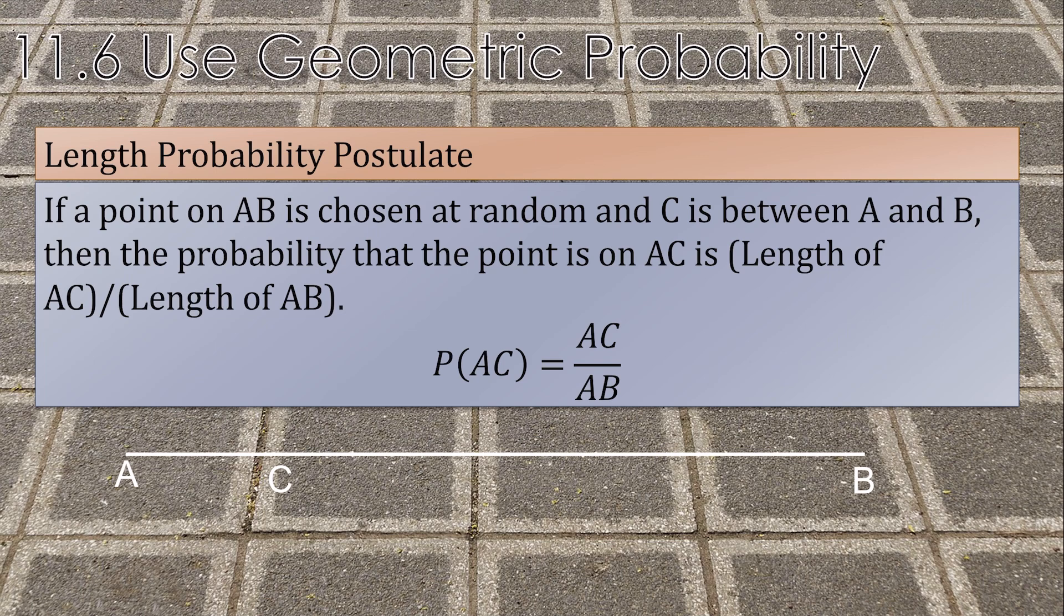So the way this is written, the P stands for probability. The AC tells you what you want. And then it would be the length of AC, which is the part we want, over the total length.